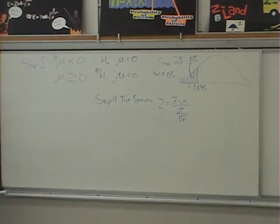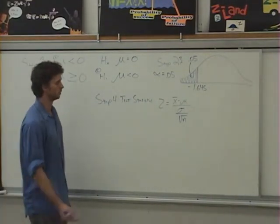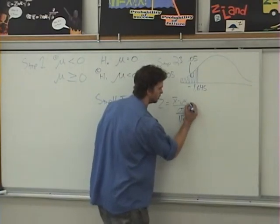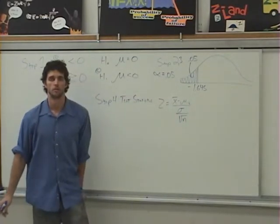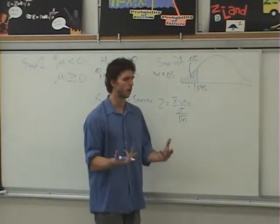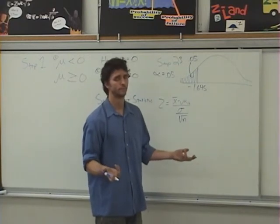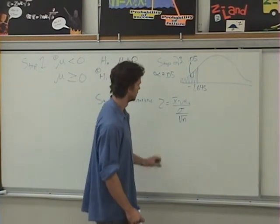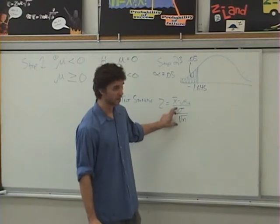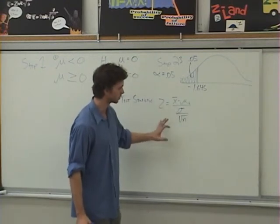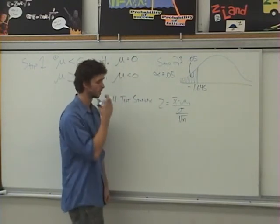The test statistic is this time z equals x-bar minus mu divided by sigma over the square root of n. We could put mu x-bar there. But you ask yourself, mu x-bar. What is mu x-bar? It's mu. They're both the same thing. Notice this thing here is sigma x-bar but that's sigma over square root of n. That's our test statistic.